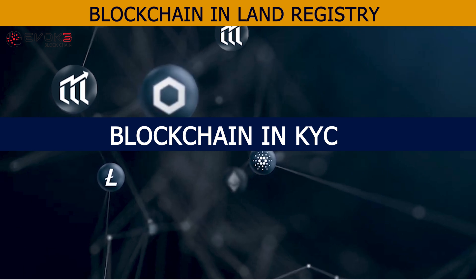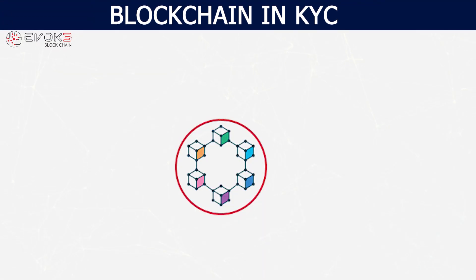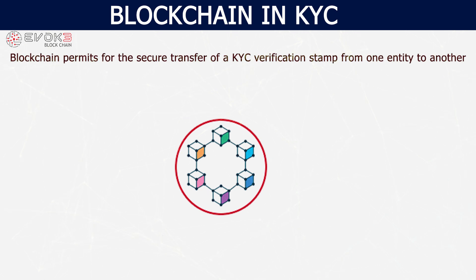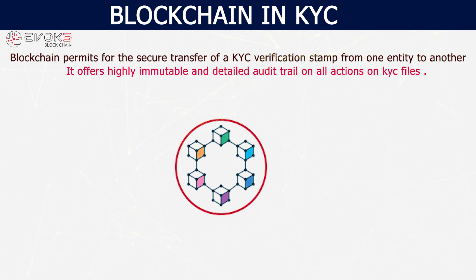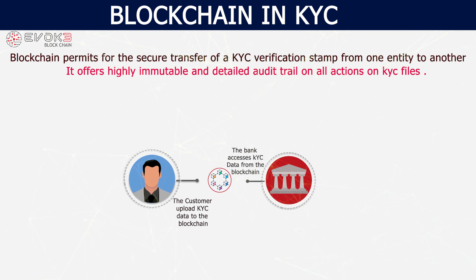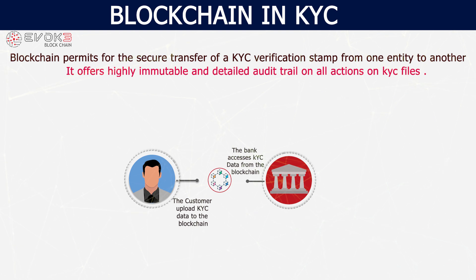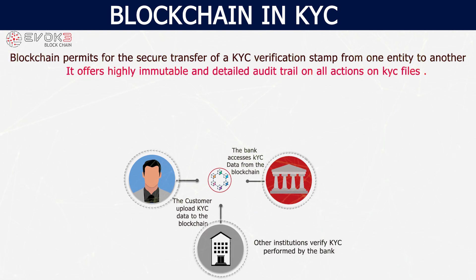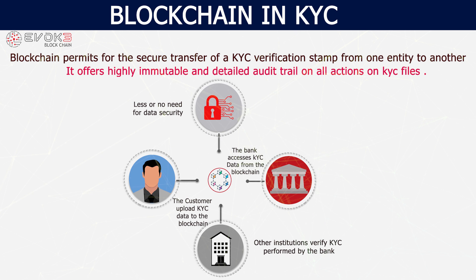Blockchain in KYC. Blockchain helps in KYC systems by permitting the secure transfer of KYC verification stamps from one entity to another. It offers a highly immutable and detailed audit trail on all actions on KYC files. In a centralized blockchain-based KYC arrangement, customer data and documents are stored in a distributed ledger. The bank that performs KYC stores all relevant details and generates a unique KYC number. Another bank can use that unique KYC number to access the central registry and download customer details from the blockchain.